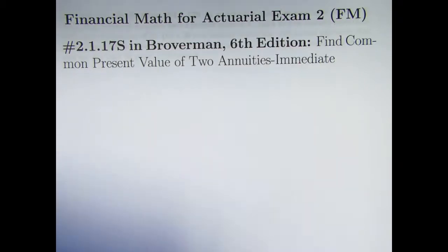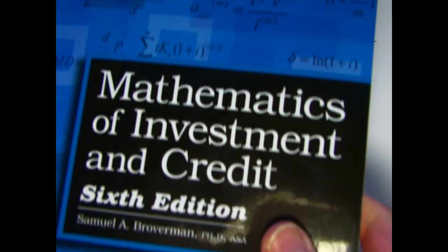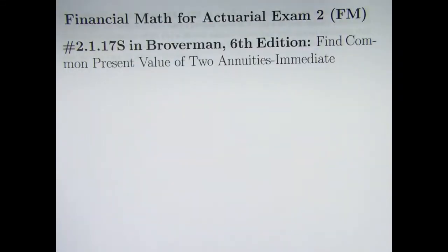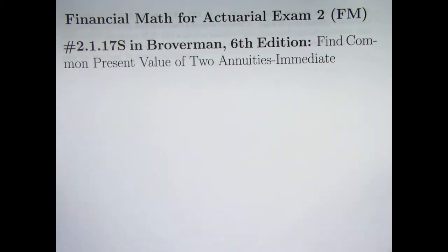To this point, in working through problems from Chapter 2 of The Mathematics of Investment and Credit by Samuel Berwerman, we've been mostly focusing on finding future values of annuities immediate, where the future value is evaluated immediately after the last payment. In this video, we're going to transition to finding present values of annuities immediate, in this case, find a common present value of two annuities immediate.